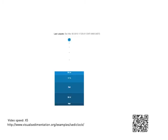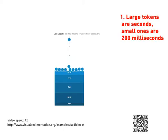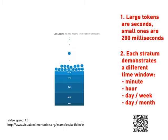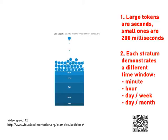Seti Clock is a clock inspired by an hourglass. Large tokens represent seconds, and small tokens are 200 milliseconds. Each stratum demonstrates a different time window.